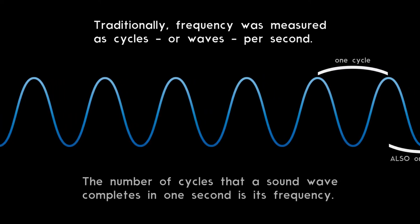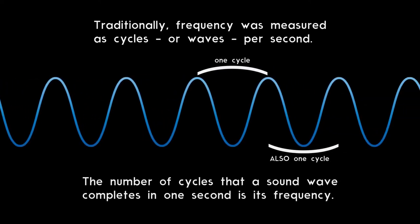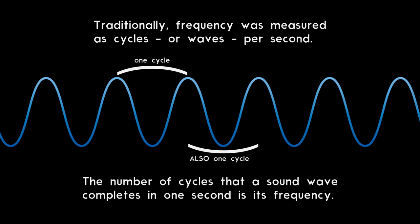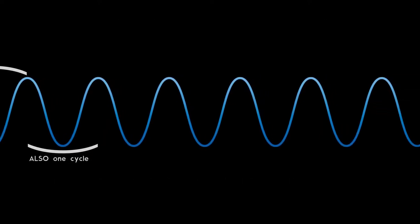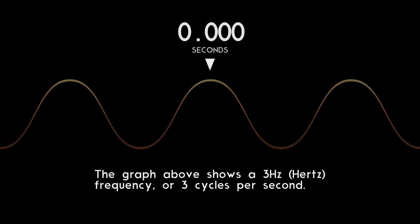Traditionally, frequency was measured as cycles, or waves, per second. The number of cycles that a sound wave completes in one second is its frequency. The graph above shows a 3 Hz frequency, or 3 cycles per second.